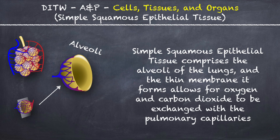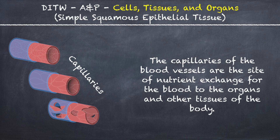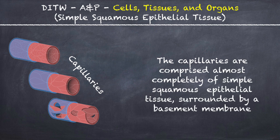Simple Squamous Epithelial Tissue comprises the alveoli of the lungs, and the thin membrane it forms allows for oxygen and carbon dioxide to be exchanged with the pulmonary capillaries. The capillaries of the blood vessels are the site of nutrient exchange for the blood to the organs and other tissues of the body. The capillaries are comprised almost completely of Simple Squamous Epithelial Tissue surrounded by a basement membrane.